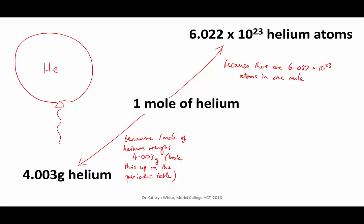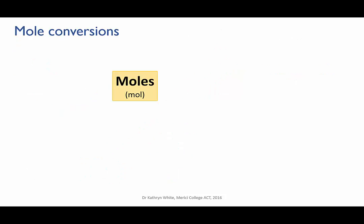We're going to draw a map that will relate moles to other ways of measuring substances. Let's leave our specific helium example and make a more general map. We'll start with moles. Remember this is our special number that essentially allows us to skip count how many atoms or molecules we have in a sample.